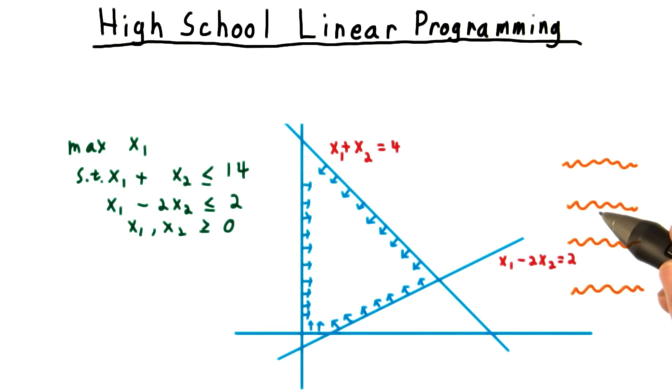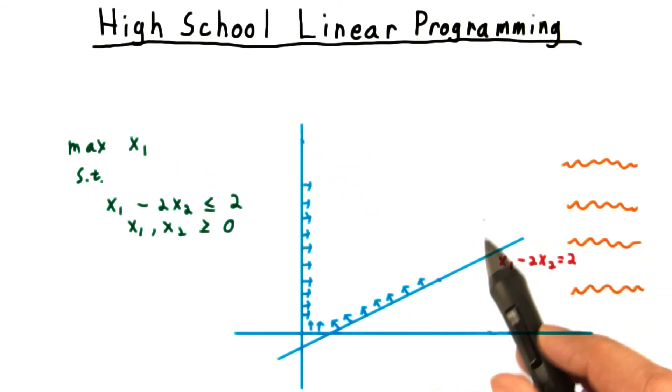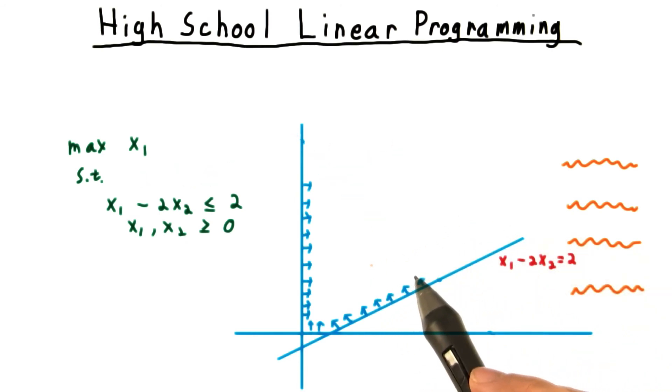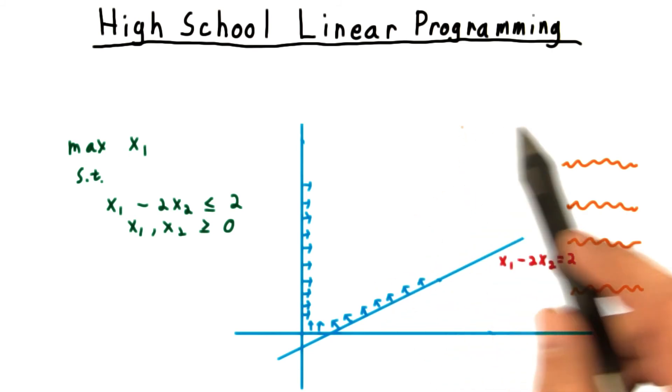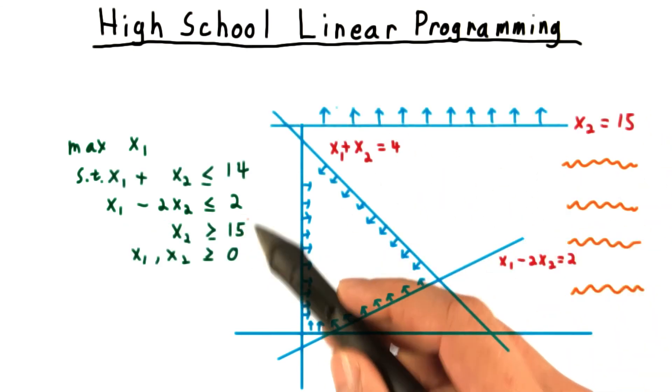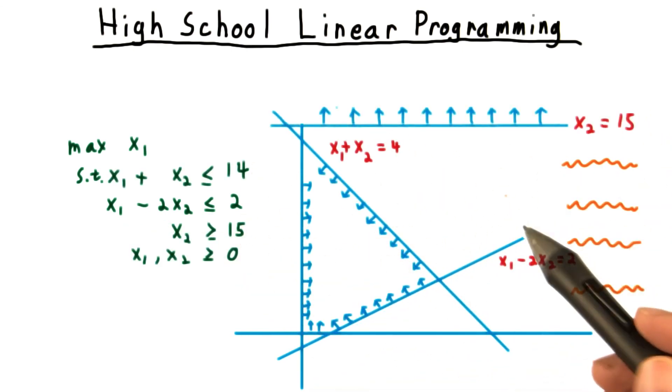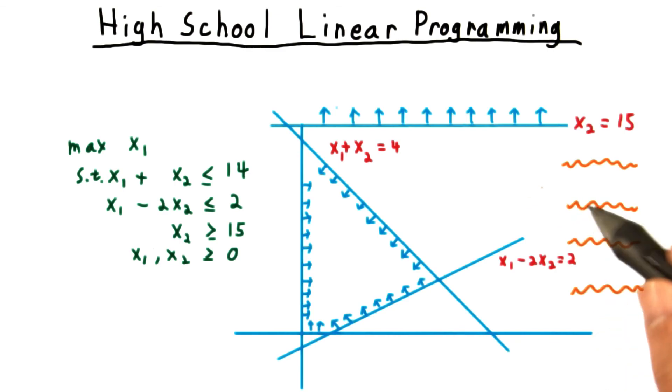So those are the three things that can happen. The constraints can create a bounded region, and we find an optimum inside of there. The region can be unbounded, in which case it's possible that there's no optimum solution, because for any solution, there's always a better one. Or the region that satisfies all the constraints can be empty, in which case there's no solution at all.